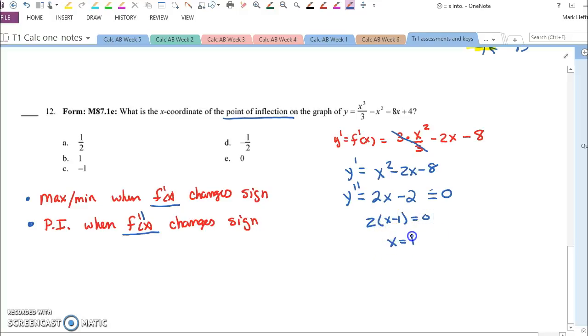x equals 1, and is this a sign change? Of course, because 2x minus 2 is just a line that definitely crosses the x-axis at x equals 1. So that's where my point of inflection happens.